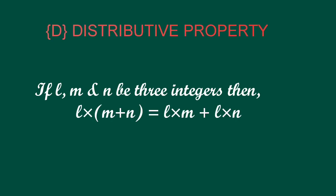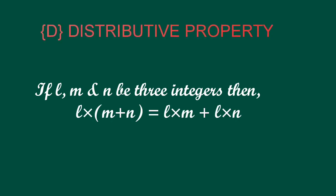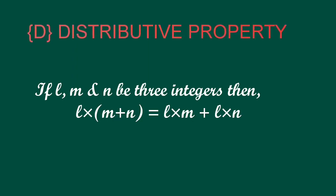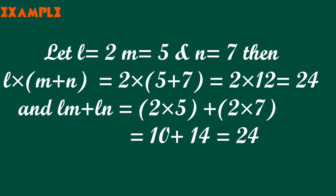Distributive property: if l, m and n be three integers then l in bracket m plus n equals l into m plus l into n. If l equals 2, m equals 5 and n equals 7, then on applying distributive property we will get the same answer that is 24.